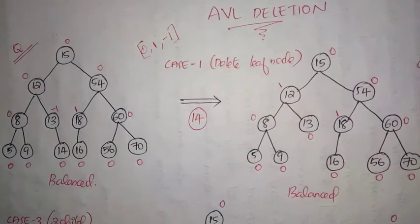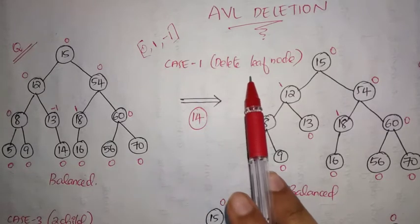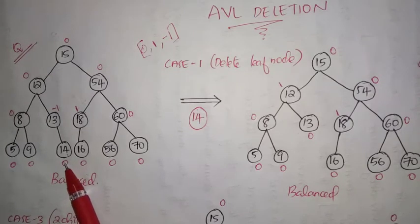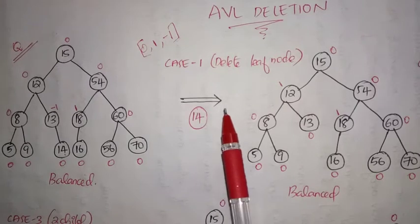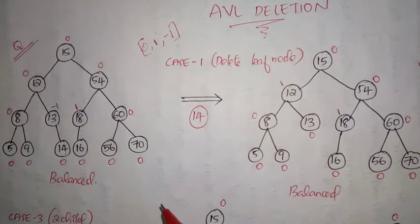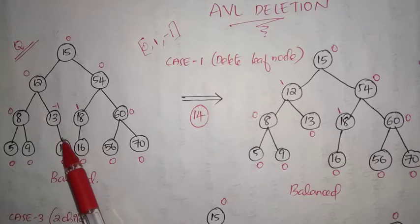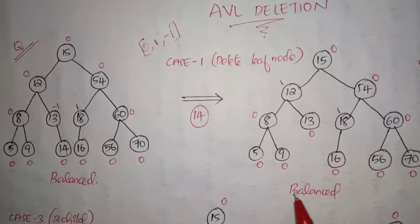So this is our question. In AVL deletion, various cases are there. Among them, the first one is deletion of a leaf node. Here I have taken leaf node 14, where the balancing factor is always 0. In such a case — where we have to delete a leaf node — we can delete the leaf node directly; we don't need to perform anything else. So the AVL tree now becomes like this, where 14 is removed.